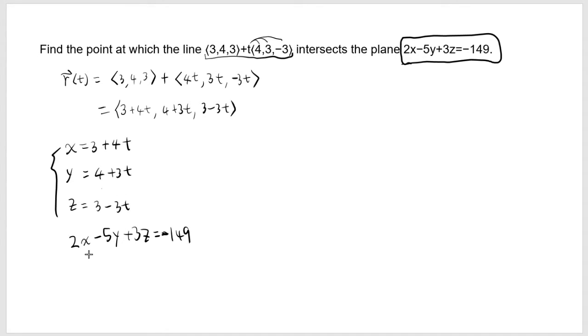So this first equation, if you replace x by 3 + 4t, minus 5 times 4 + 3t, and then plus 3 times z, which is 3 - 3t, that's same as negative 149. And if you look at this, it's perfect because now you only have variable t, which you can easily solve. So let's do that.